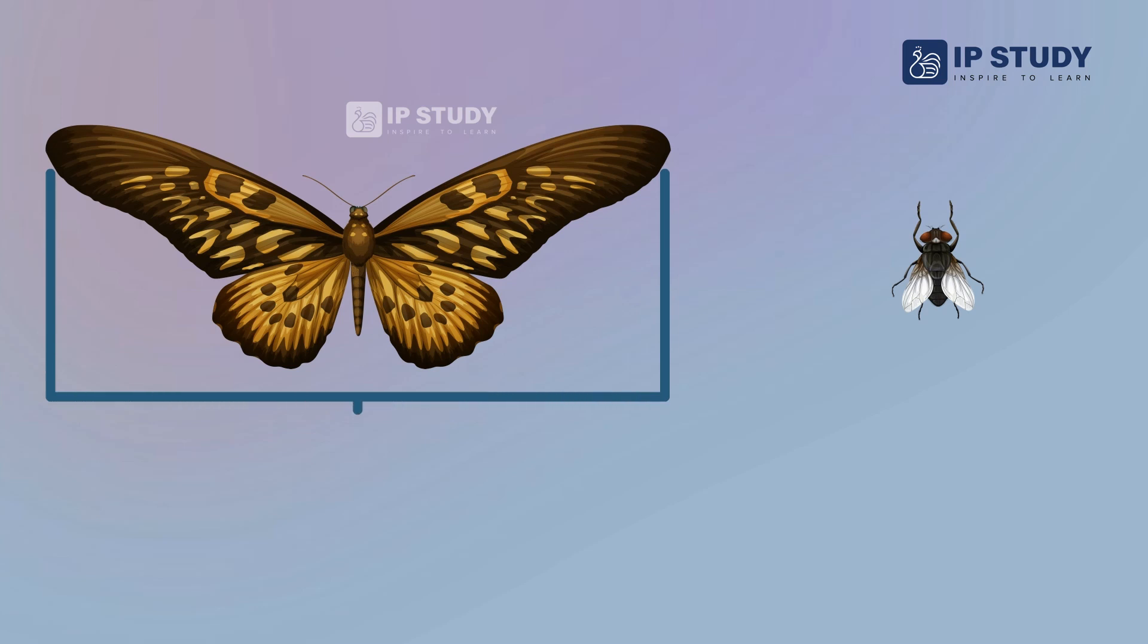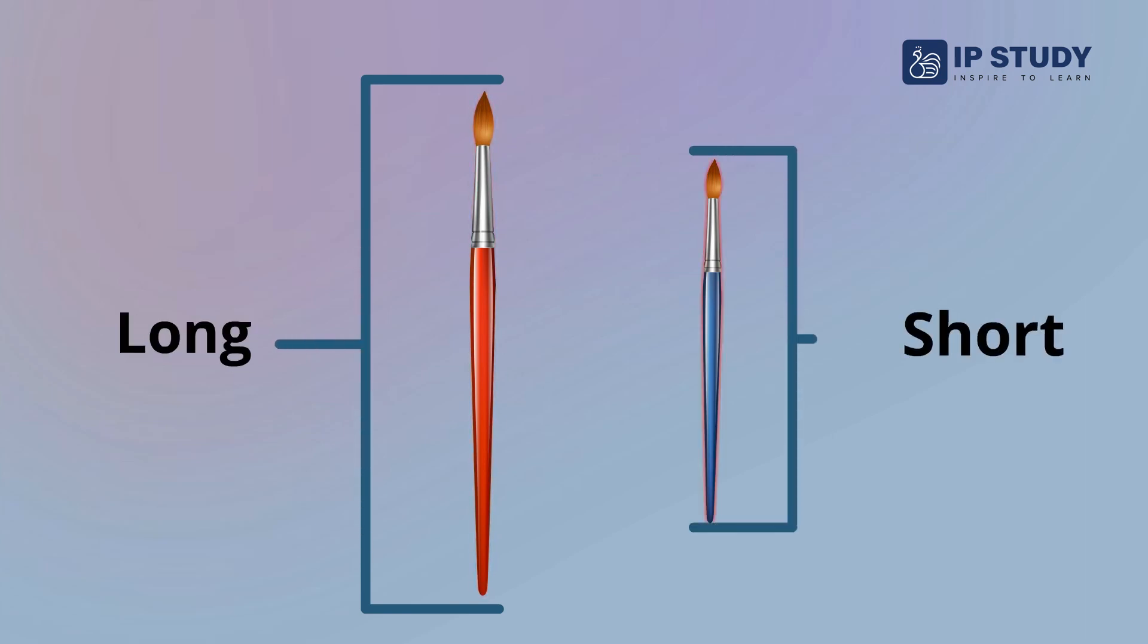When we compare objects based on size, we get long and short. Look at these paint brushes. This is a long red brush, while this is a short blue brush.